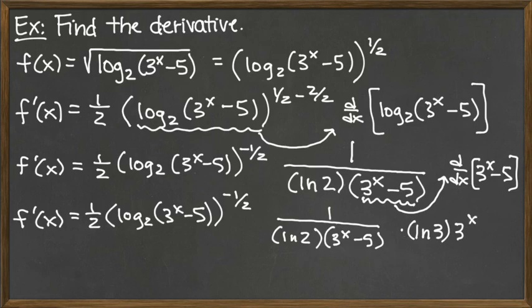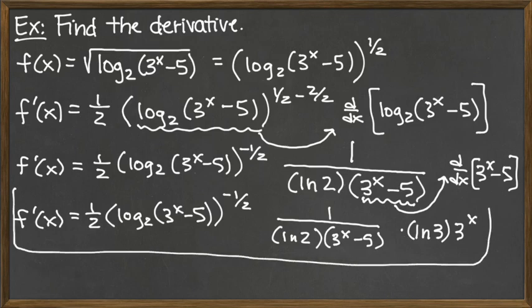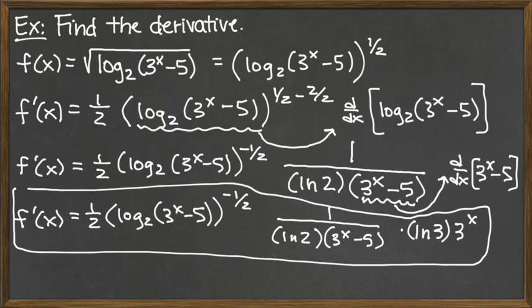Now we would, in general, be continuing on with the subtraction rule by taking, by subtracting the derivative of the constant 5, but that would just be subtracting 0. And so in the end, that ends up being our final answer. It's not written super nicely, but we can leave it as that for our final answer.